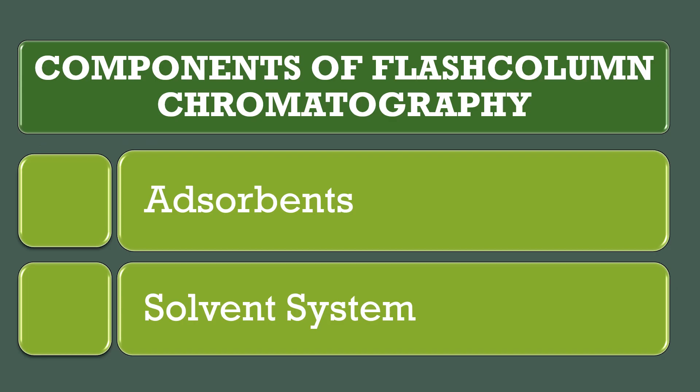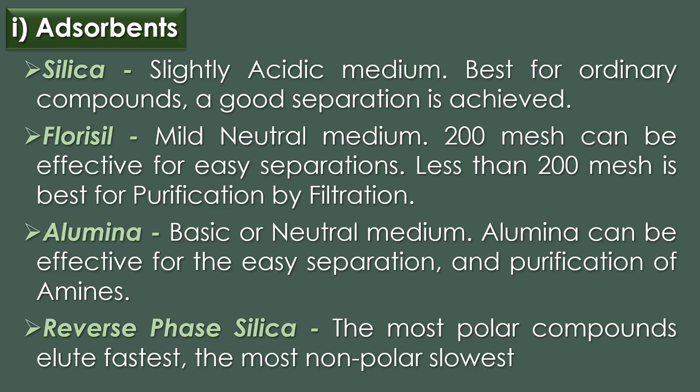There are two components of flash column chromatography: absorbent and solvent system. The first component is absorbent, which includes silica, florisil, alumina, and reverse phase silica.